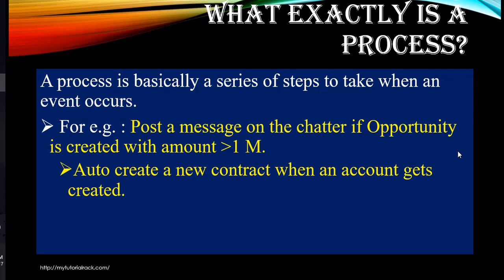For example, you wanted to post a message on Chatter if an opportunity is created with an amount greater than 1 million. So here the event would be that whenever an opportunity record gets created and the amount is more than 1 million. Then you might want to post a message on Chatter or send an email to the account owner. That is considered a process.